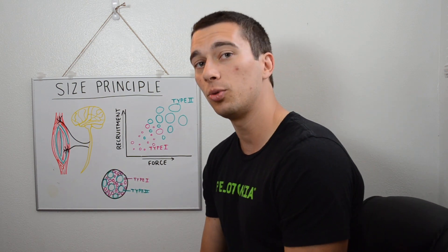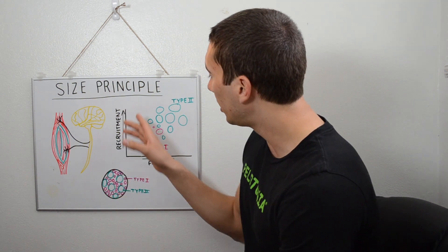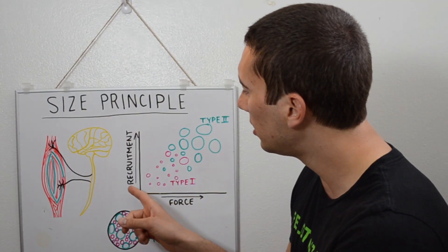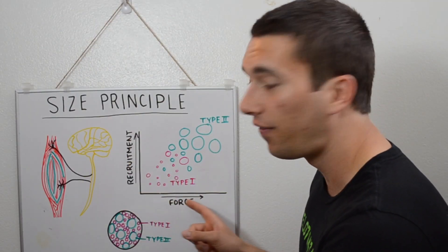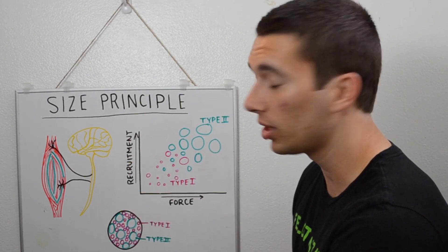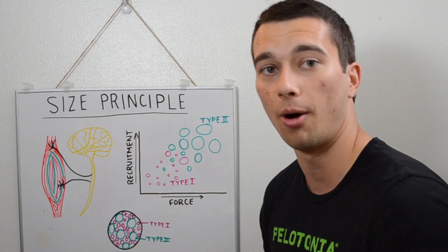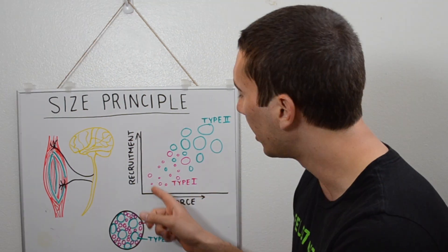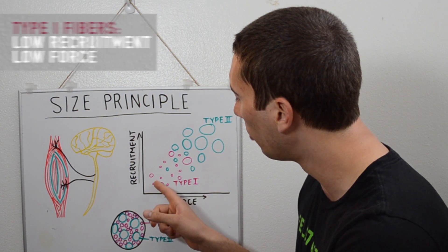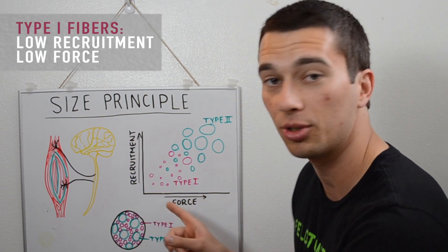Now if we think about which ones are recruited first, we can look at this chart here. So this is the recruitment and then this is the force. Low force activities, say you're just picking up a pencil or something, we're going to look down here. Low recruitment, low force activities would use the type 1 fibers only.